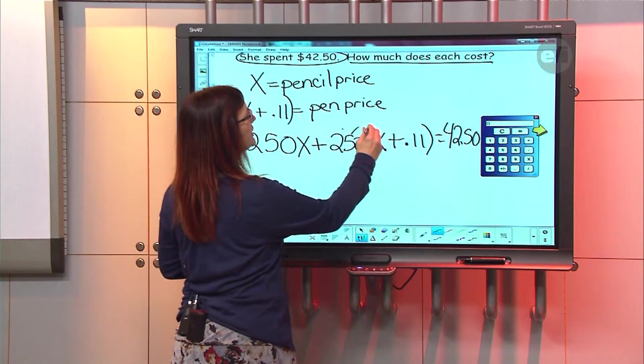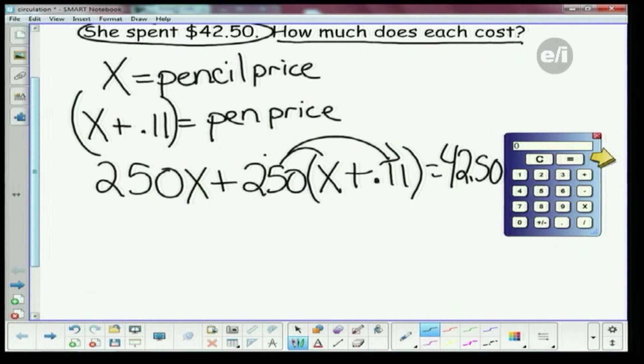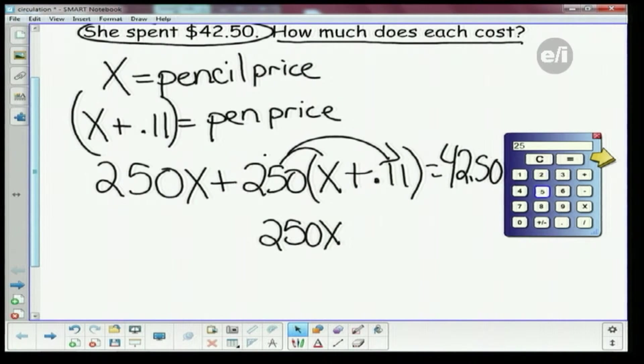We're gonna take this problem down. We need to use the distributive property here. So what's 250 times X? 250X, right. And then we have to do 250 times 11. So I'm gonna go to the calculator for that. I could do it the long way, but I don't have to because I have a calculator and you don't.